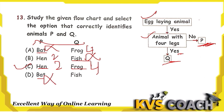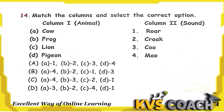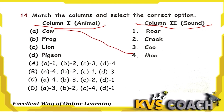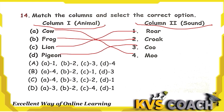Question 13: Match the column — animal to its sound. Cow's sound is moo, frog's sound is croak, lion's sound is roar, and pigeon's sound is coo. So the matching is A-4, B-2, C-1, D-3, which corresponds to option B.